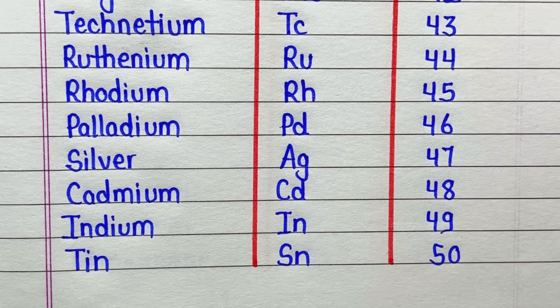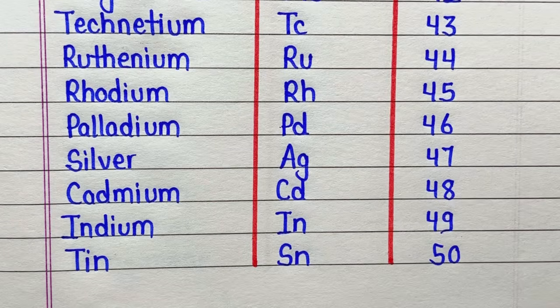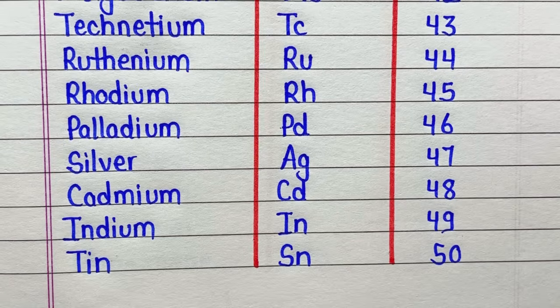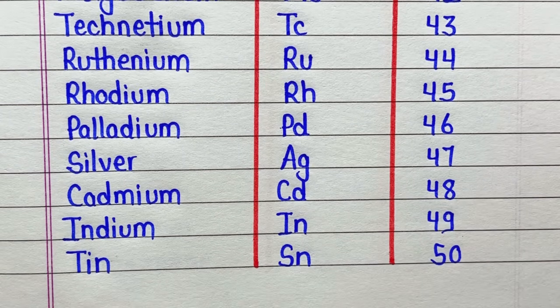Indium, symbol is In, atomic number is 49. Tin, symbol is Sn, atomic number is 50.